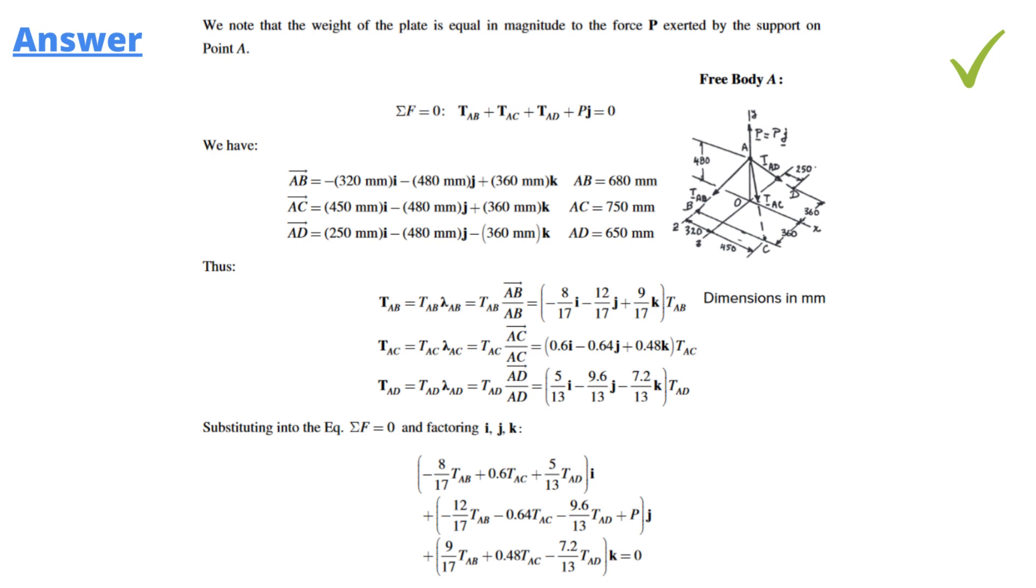So we have AB: 320 mm minus 480 mm divided by 360 mm. AB is equal to 680 mm, AC is equal to 750 mm, AD is equal to 650 mm. So the correct answer is displayed over how it's